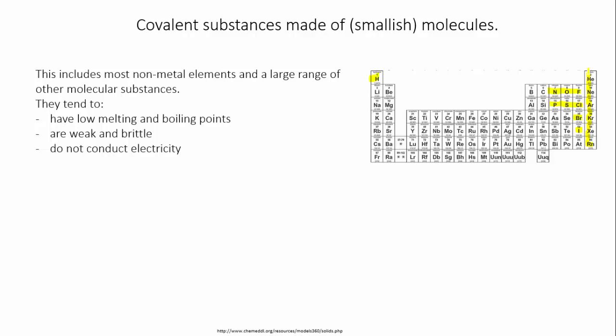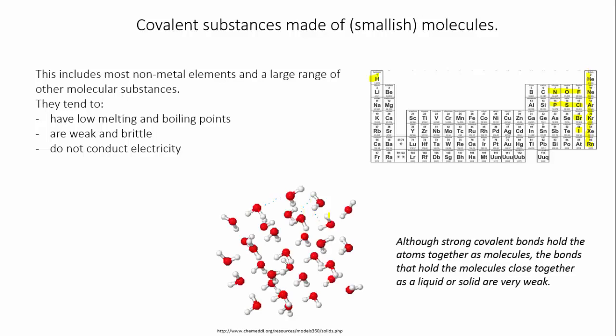Most of these properties can be explained by the fact that the substances consist of separate molecules, as opposed to lattices like ionic and metallic substances. Although the atoms in covalent molecules are joined by strong covalent bonds, the separate molecules are not. This means it takes a relatively small amount of energy to separate them, which accounts for the low melting points and the weakness.